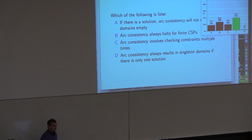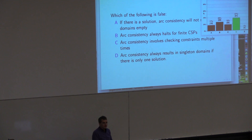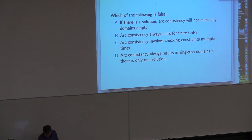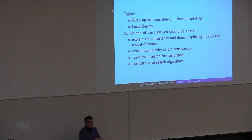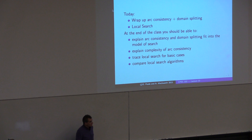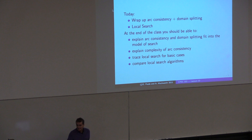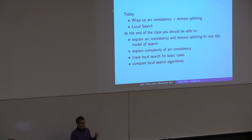Any questions? So if there's only one solution, it might end up with big domains and we'd have to do lots of searching. Today we're going to wrap up arc consistency and domain splitting, and then start talking about local search. By the end of class we should be able to explain how arc consistency and domain splitting fit into a model of search, explain the complexity of arc consistency, trace local search for simple cases, and compare local search algorithms.